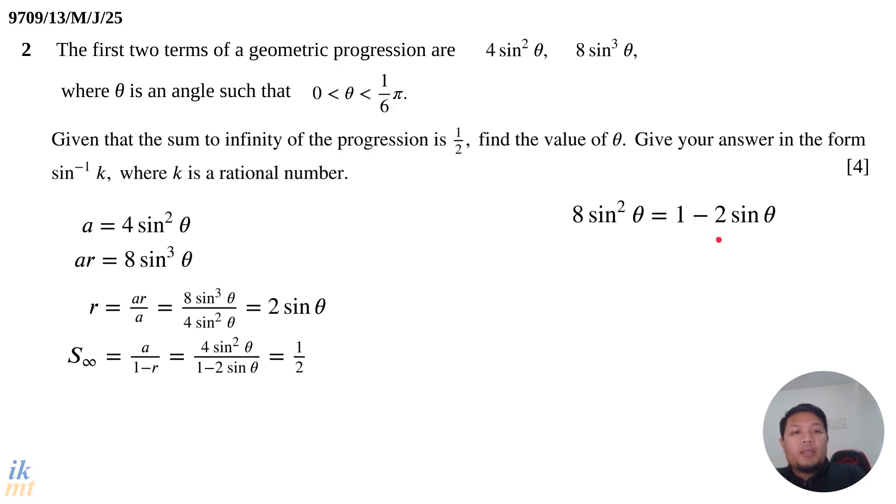This looks like a quadratic. Let's move everything to one side to make zero on the other side. It's a disguised quadratic in sin θ: 8 sin²θ + 2 sin θ - 1 = 0. We can solve by factorization: (4 sin θ - 1)(2 sin θ + 1) = 0. Using the zero product principle,